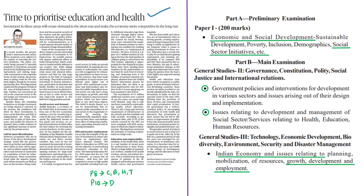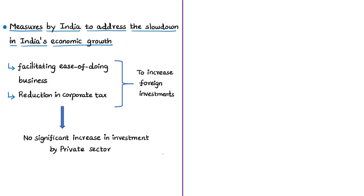The next editorial highlights the importance of social sectors such as education and health in India and emphasizes the need for investment in both sectors. The author discusses recent government measures to address the economic slowdown, including facilitating ease of doing business, reducing corporate taxes, and making large-scale concessions of around 1.45 lakh crore rupees to increase capital flow. However, despite these measures, there has been no significant increase in private investments, mainly due to weak demand in the economy.